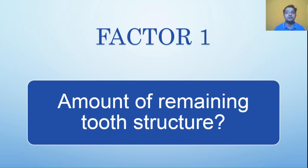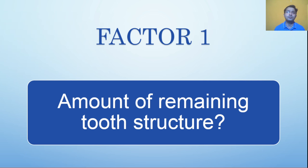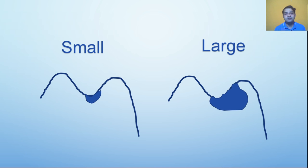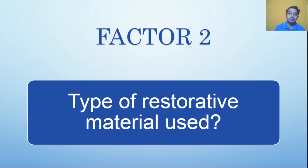The first most important factor to consider is the amount of remaining tooth structure. For example, you may have a lot of decay but a large tooth, so you will still end up having a lot of tooth structure — the resistance form may not be required as much. But there may be a small tooth where you may have to give a lot of resistance features even if the decay is really small.